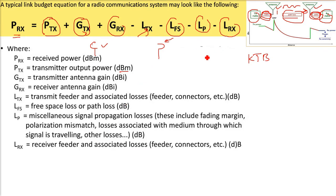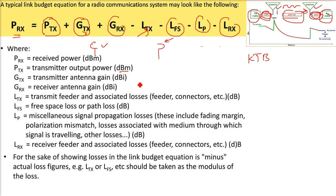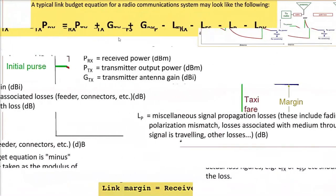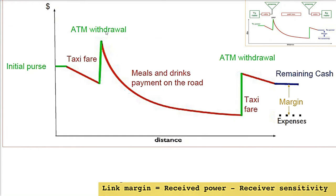All these good things that elevate the power, we add. Those which are fading and attenuating, we subtract. But because these things come in negative, we have to put a modulus. Please remember, minus minus will be positive. Link margin is what we have received, PRX, minus the receiver sensitivity. Normally, we take it as minus 82 dBm or minus 86 dBm.